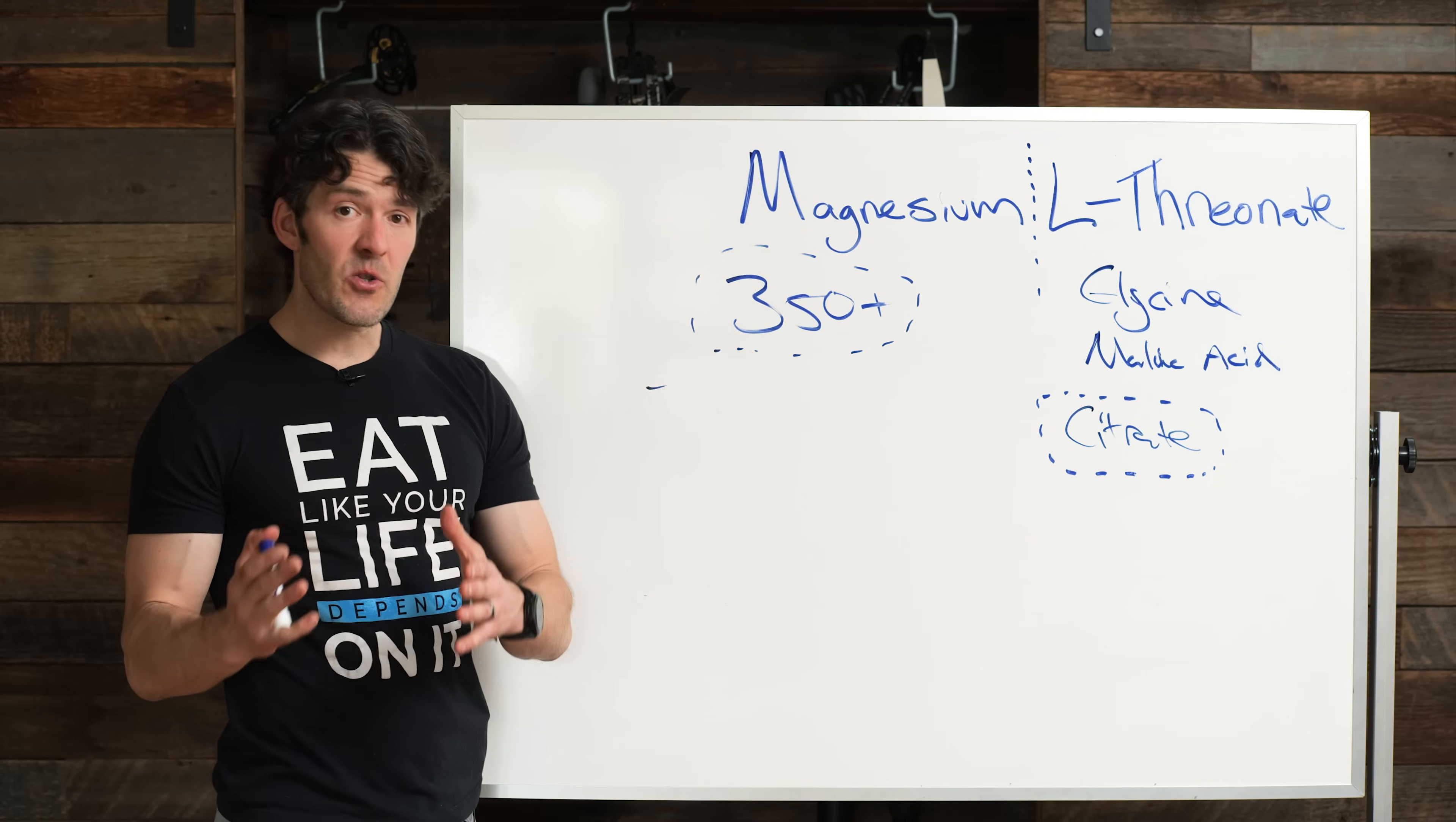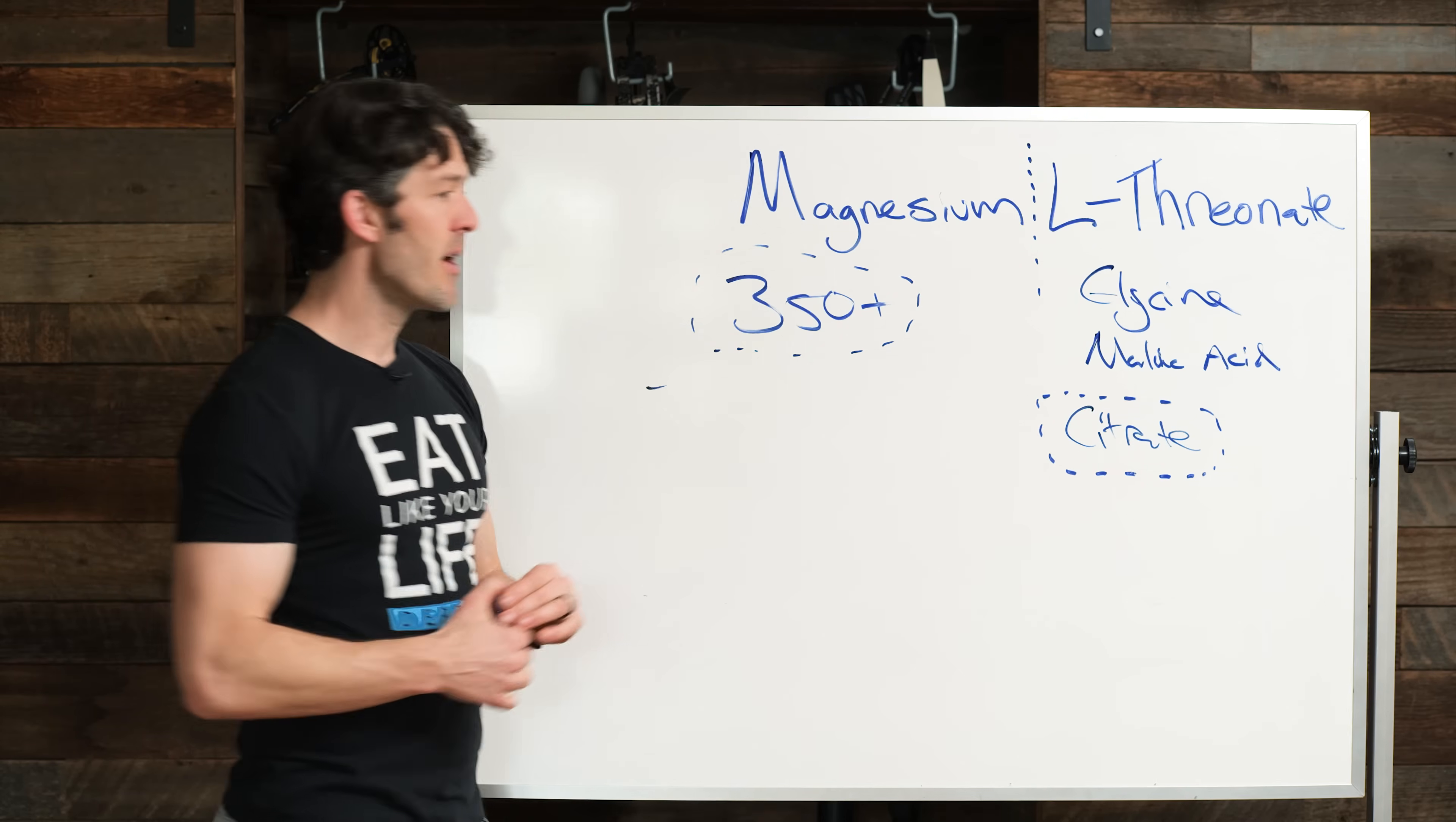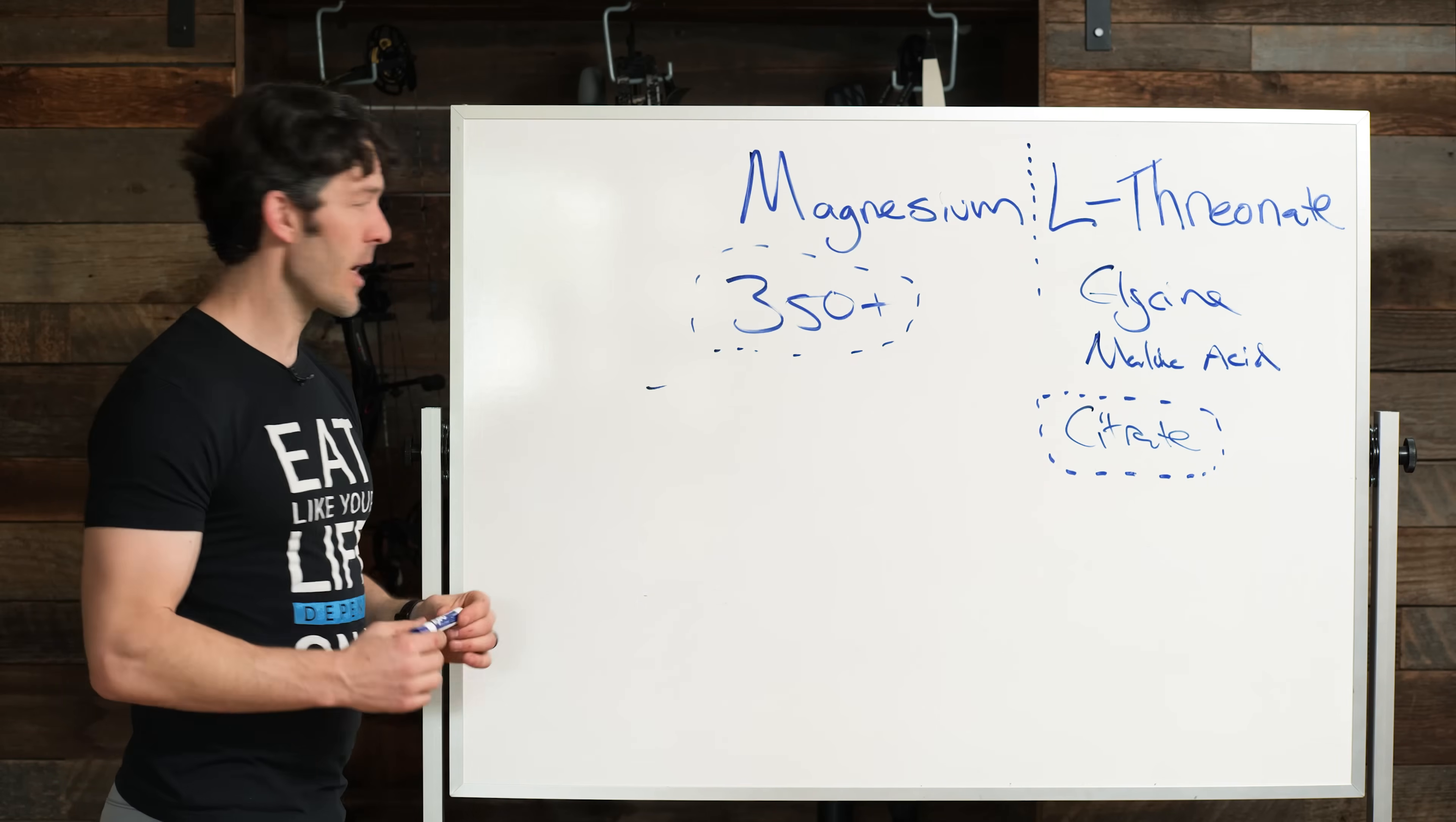So to make a long story short, remember when you're buying magnesium, you want to think of not just how much magnesium are you getting, but what is it bound to? What are the health benefits of that chelating agent? Oxide, carbonates, gluconates, convince me that they're helpful. But I'm a bigger fan of glycine, malate, and then L-Threonate, because of its enhanced absorption.